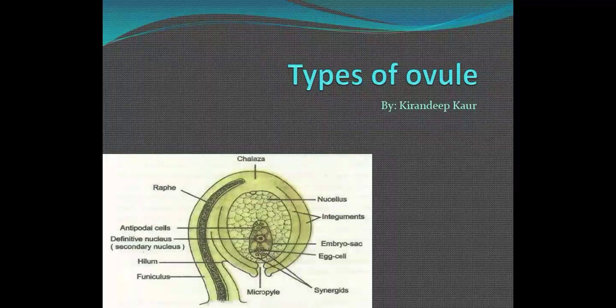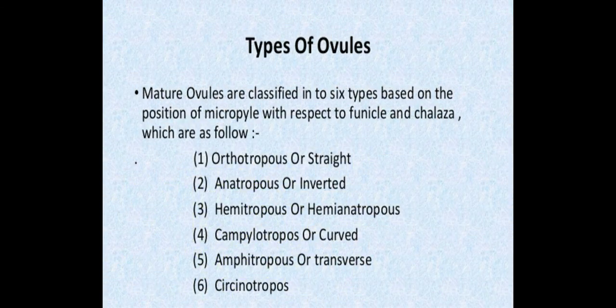So let's start with this topic. Basically there are six types of ovule, depending upon the position of micropyle with respect to the funicle and chalaza.